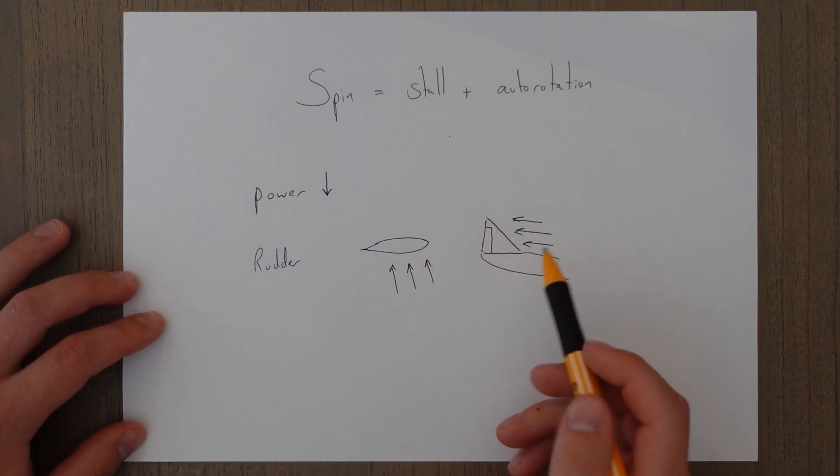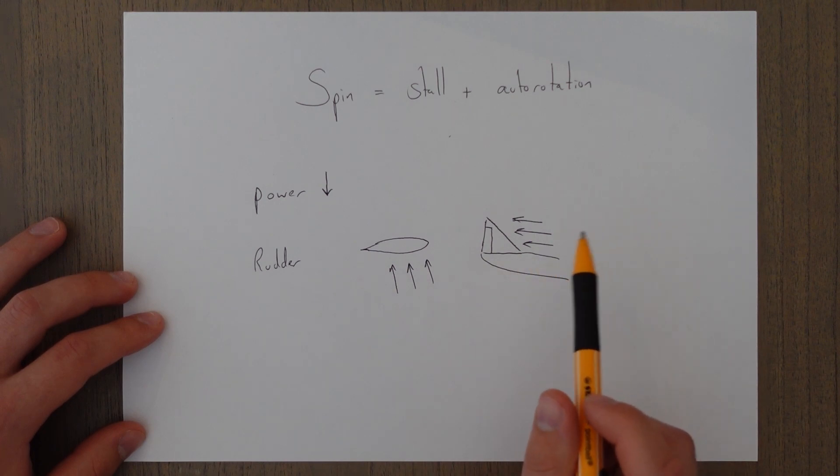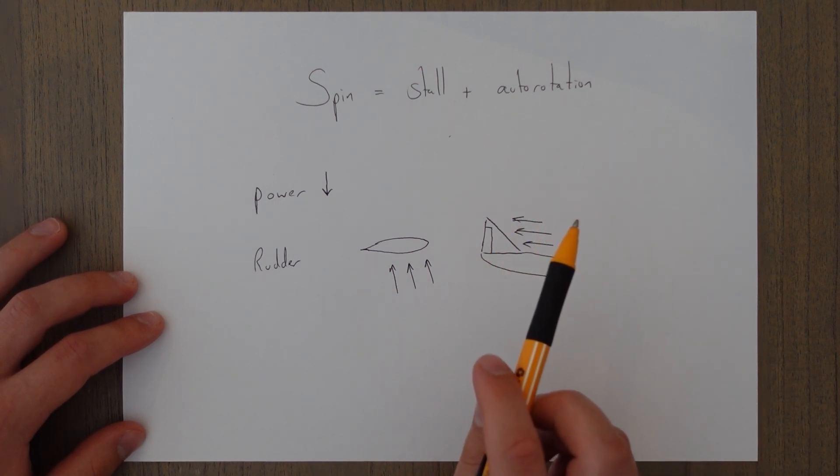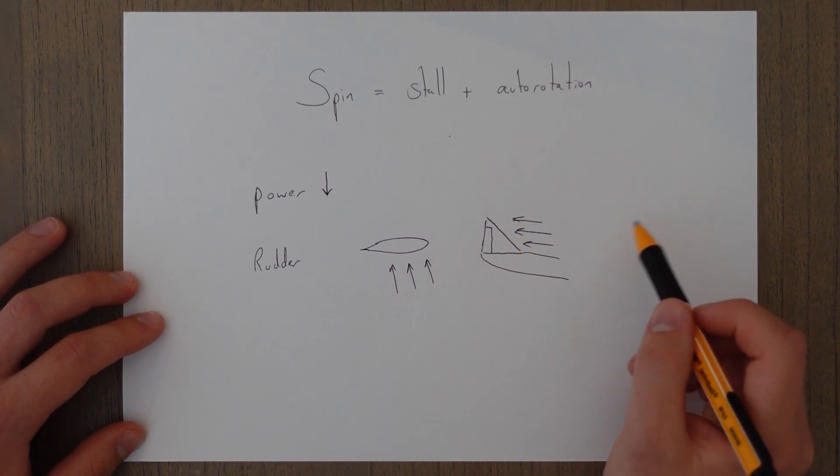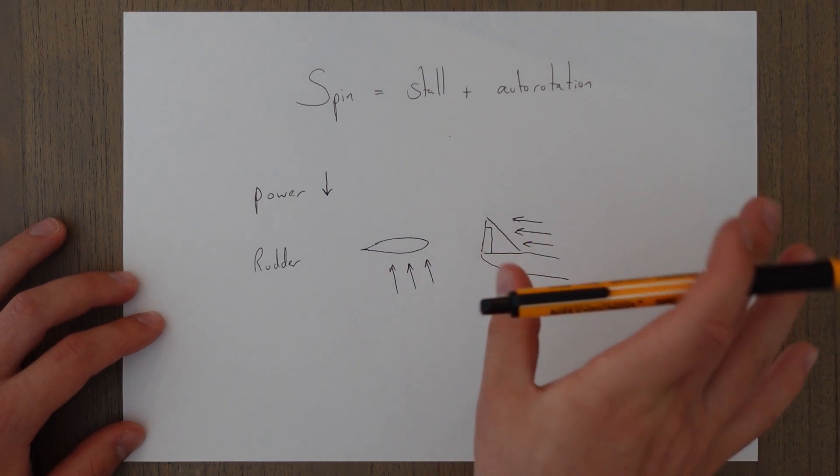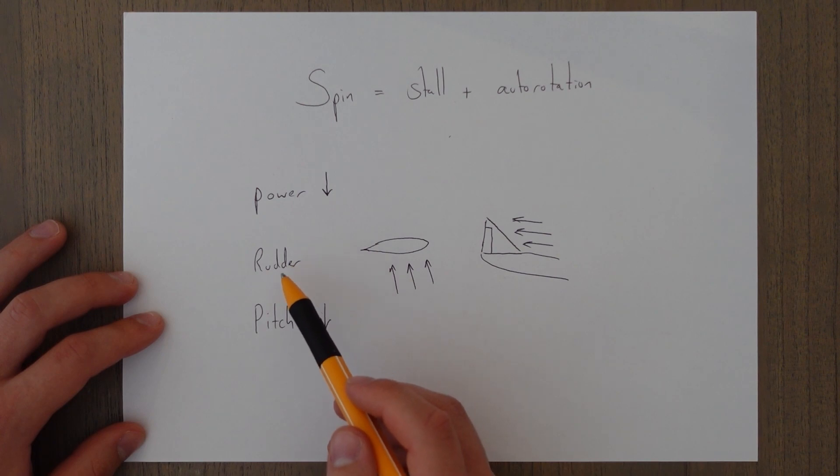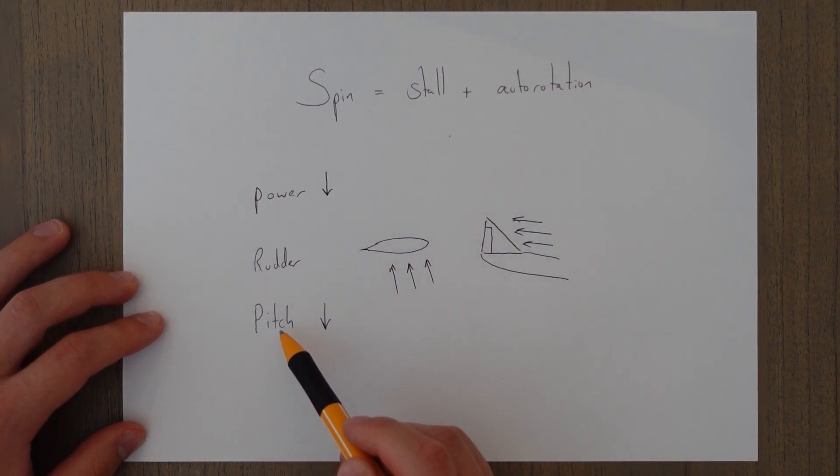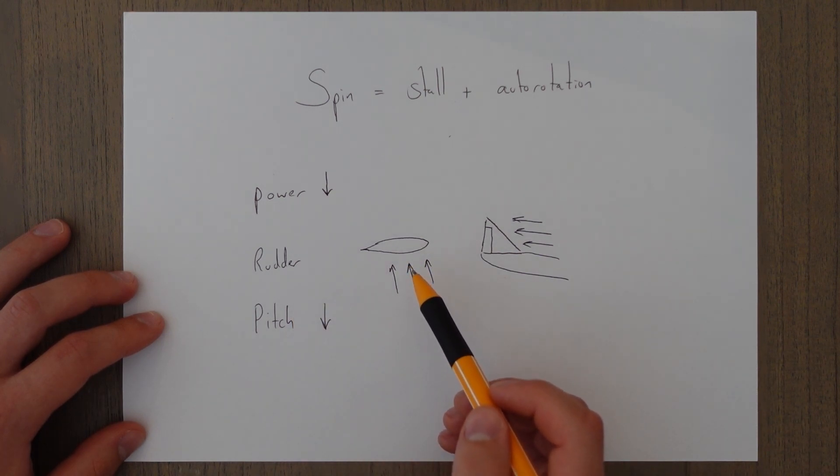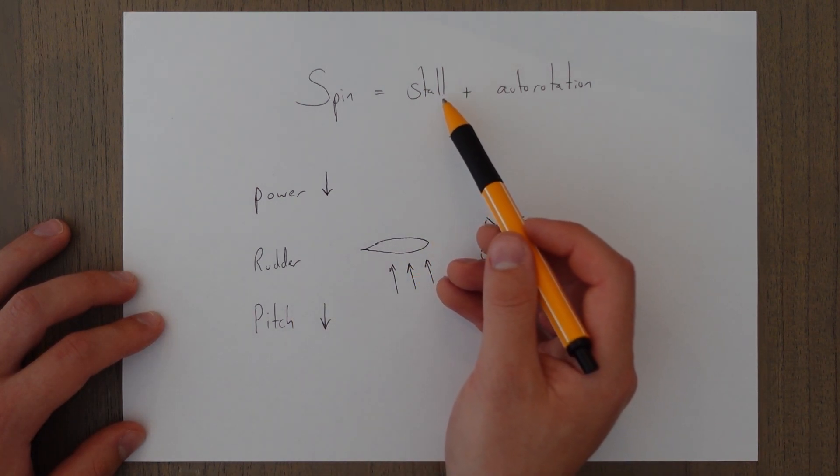Well in a spin the wings have to be stalled. So basically you apply the rudder in the full opposite direction of the spin. If you're spinning you know clockwise you put the rudder in so that you come out of that spin. At the same time as applying this full opposite rudder you also pitch the aircraft nose down in order to try and reduce this angle of attack and get us out of stall.